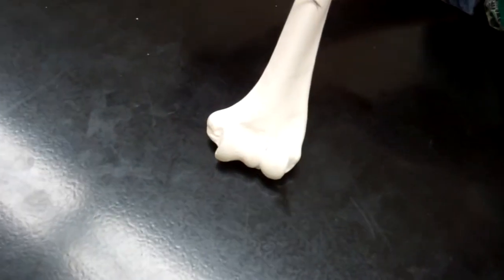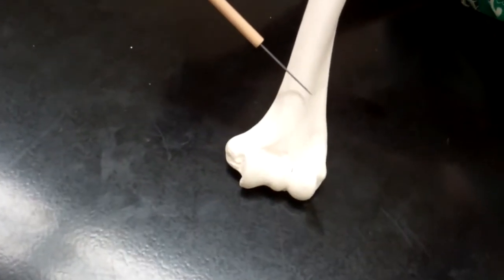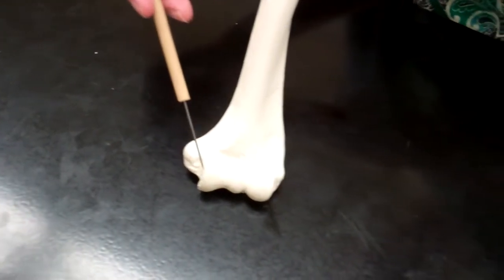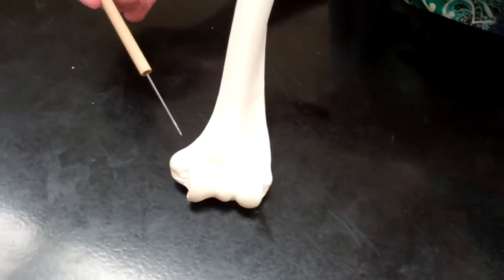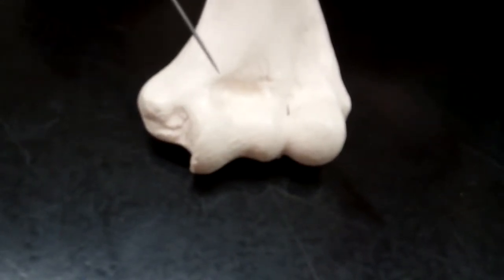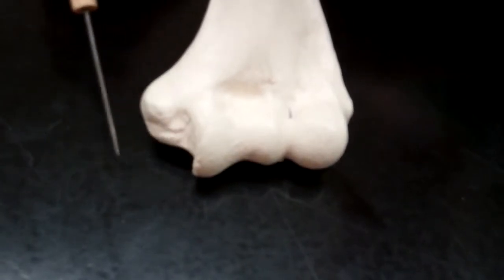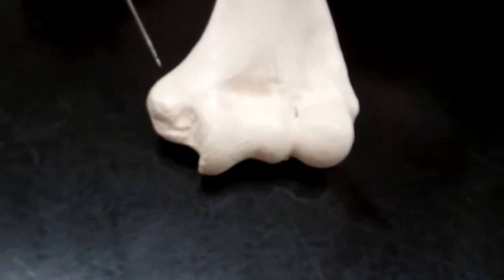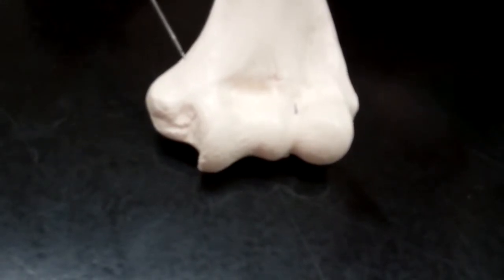Now if we continue moving down to the distal end of our humerus, there are two bumps. Now if we look at the medial side of the bottom part of our arm, we're going to find a bump.